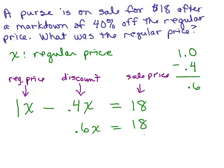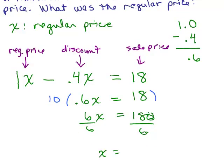Now at this point you could just divide by .6, use a calculator or whatever you want. I like to multiply both sides by 10 to get rid of the decimal points. I'm going to multiply both sides of the equation by 10 just to get rid of those decimal points, so I don't need to get my calculator out. So 10 times .6 is just 6, and then 10 times 18 is 180. Now 180 divided by 6, X is $30.